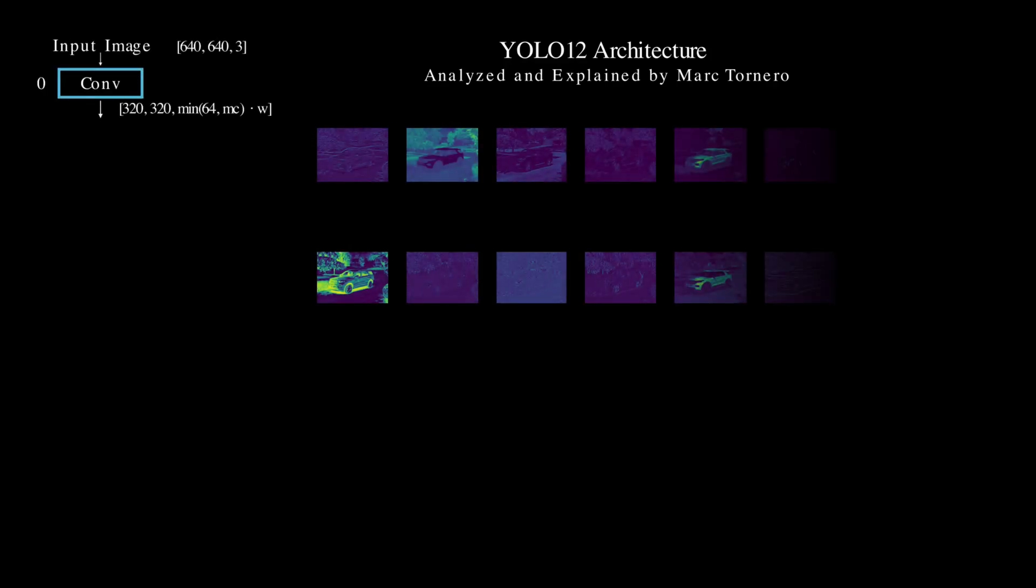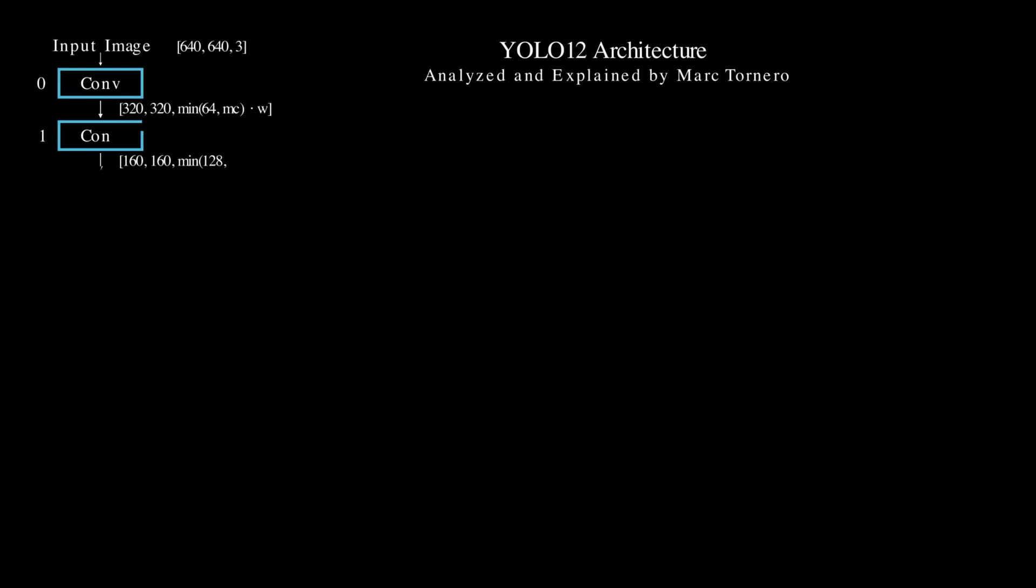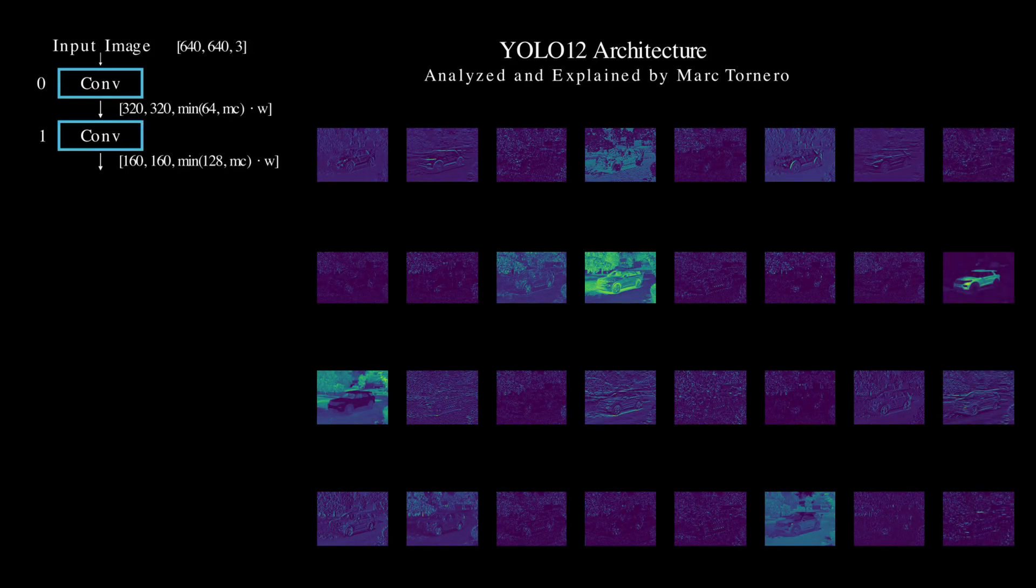As the input image enters the architecture, it begins its journey through a carefully designed sequence of operations. In the first two stages of the backbone, we have regular convolutional layers that downsample the image, reducing its spatial dimensions while capturing basic patterns like edges and textures.